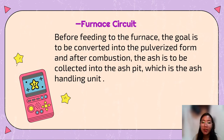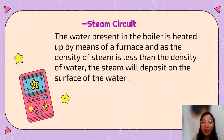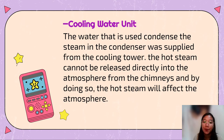In the furnace circuit, before feeding to the furnace, the coal is to be converted into pulverized form, and after combustion, the ash is to be collected into the ash pit, which is the ash handling unit. In the steam circuit, the water present in the boiler is heated up by means of a furnace, and as the density of steam is less than the density of water, the steam will deposit on the surface of the water.